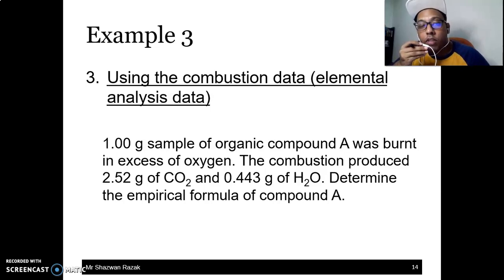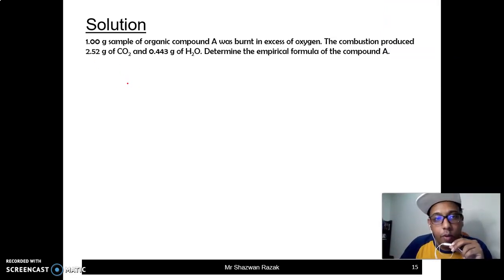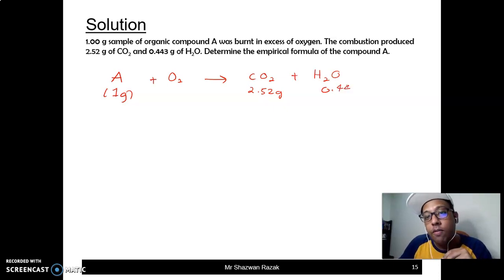We were given 1 gram sample of organic compound which is burned in excess oxygen. And we have to determine the empirical formula. Kalau kita tengok contoh ni, contoh ni dia tak bagi mass of carbon, hydrogen, oxygen macam sebelum ni. Dia kata organic compound burned in excess oxygen, 1 gram, kita nak kena cari dia punya empirical formula. So how to do this? The first one, aku tengok bawah. We know that mass dia adalah 1 gram. A ni, mass dia adalah 1 gram. Bila you bakar dalam oksigen, dia akan menghasilkan CO2 dan H2O. CO2 adalah 2.52 gram and H2O adalah 0.443 gram.